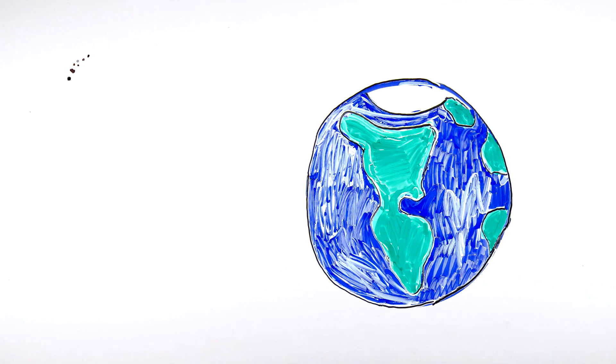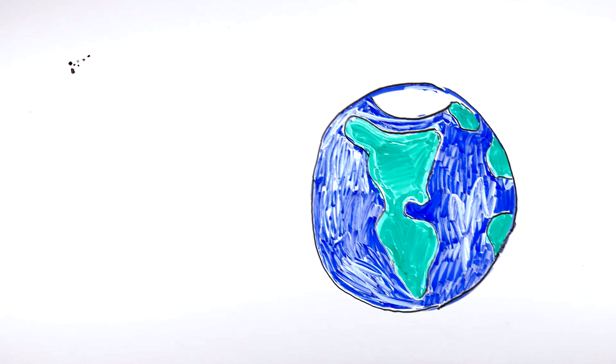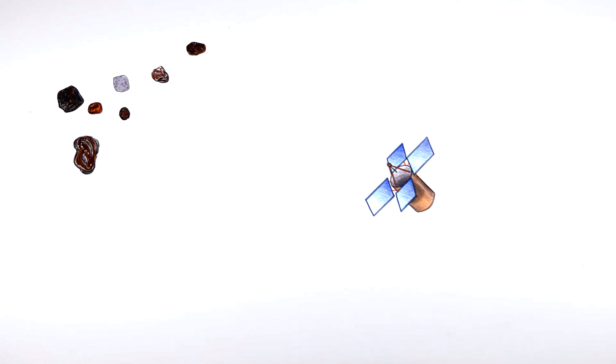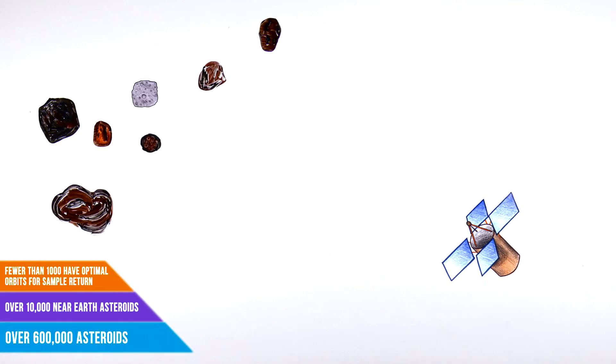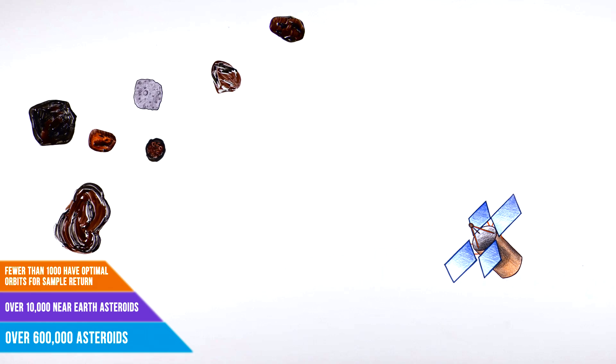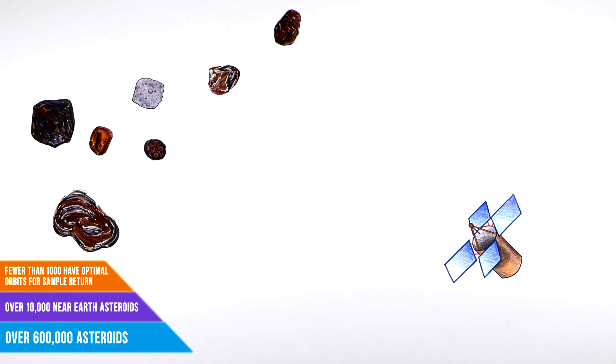It takes a lot of time and a lot of fuel to travel to an asteroid, so optimizing the trip is important. NEAs with Earth-like orbits require minimal energy, meaning we can get there using the lift provided by our rocket. Fewer than 1,000 asteroids have optimal orbits for a sample return mission.